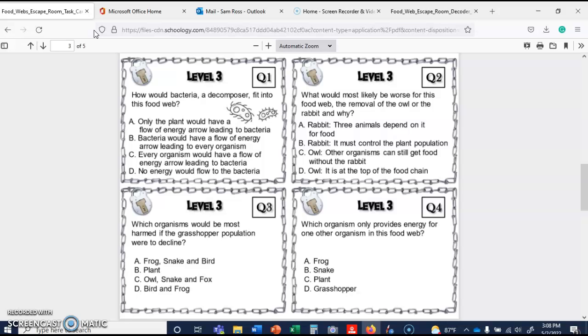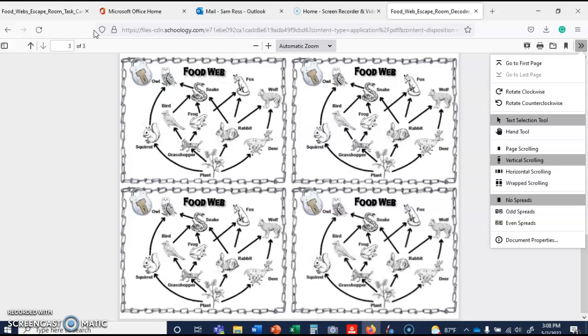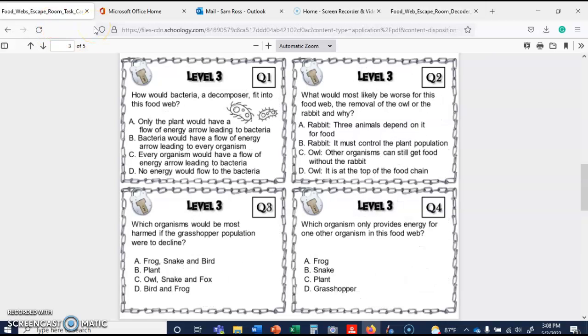Which organisms would be most harmed if the grasshopper population declined? So let's take a look at that food web we're here. So it looks like the frog and the bird rely on the grasshopper, and then the snake relies on the frog and the bird. So let's see what our options are. Frog, snake, and bird. Plant. The plant's not in there. Owl, snake, and fox. So bird and frog would both, it's D.